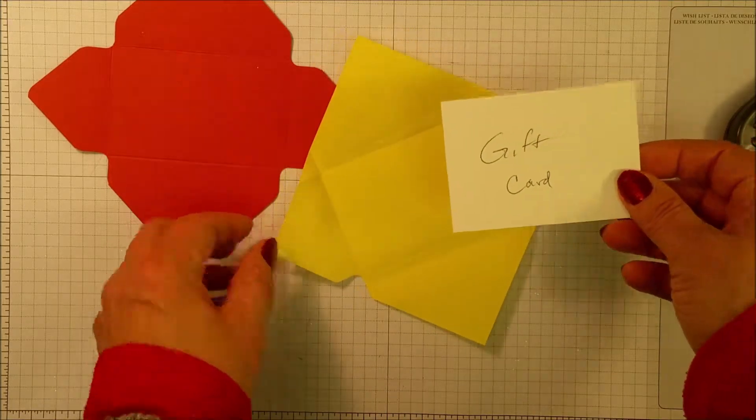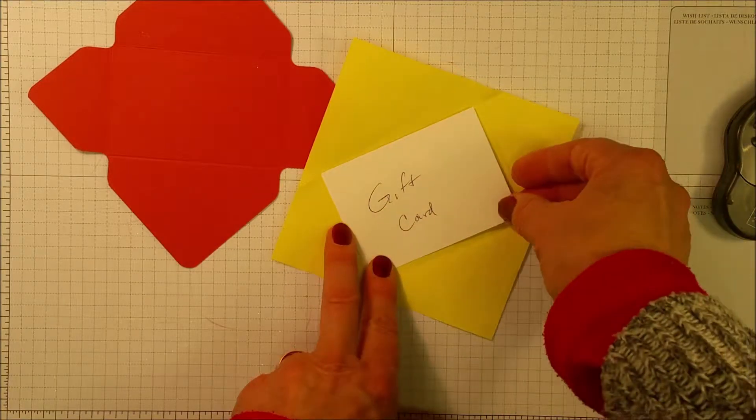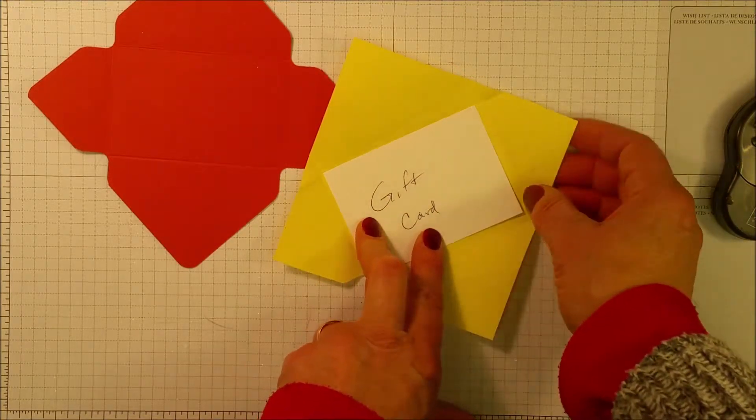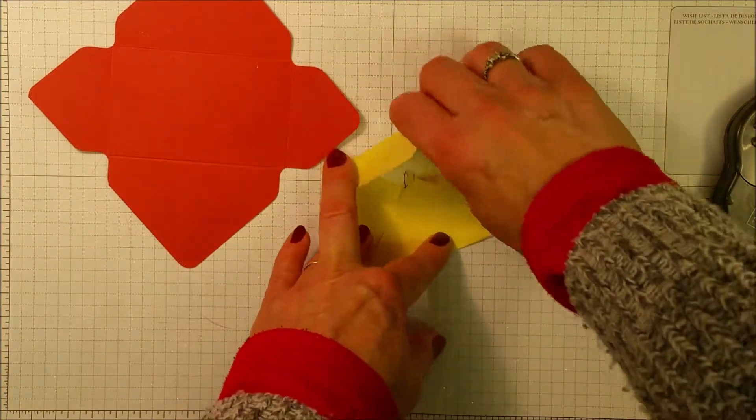So if you imagine that this is the gift card, I'm going to set it at an angle on the square. And then the concept is very simple. You're just going to wrap the sides in, wrap the bottom in, and voila, you have an envelope.